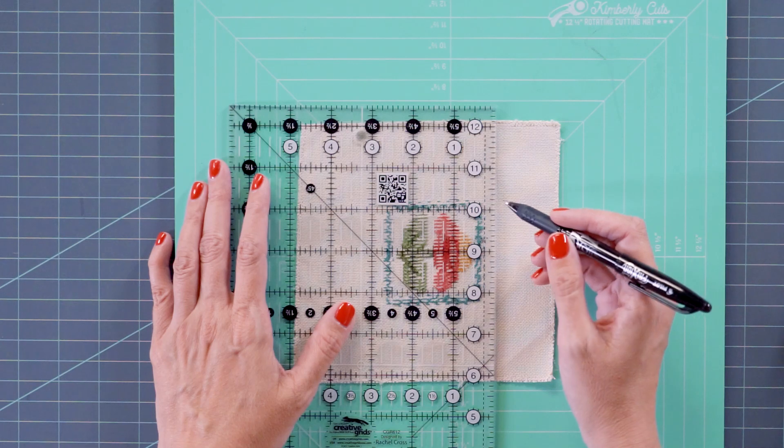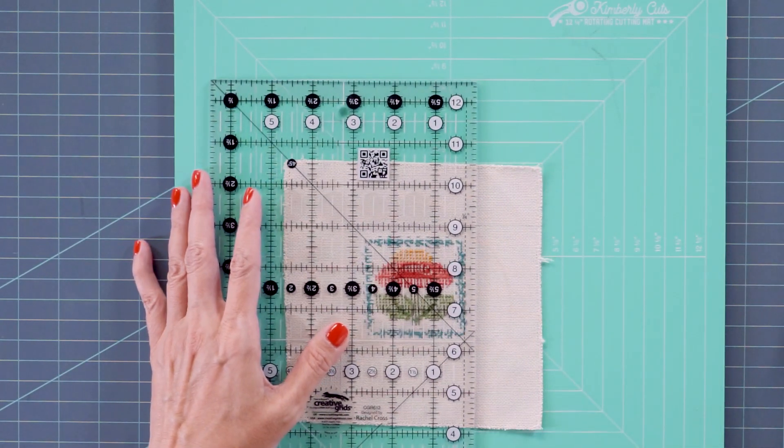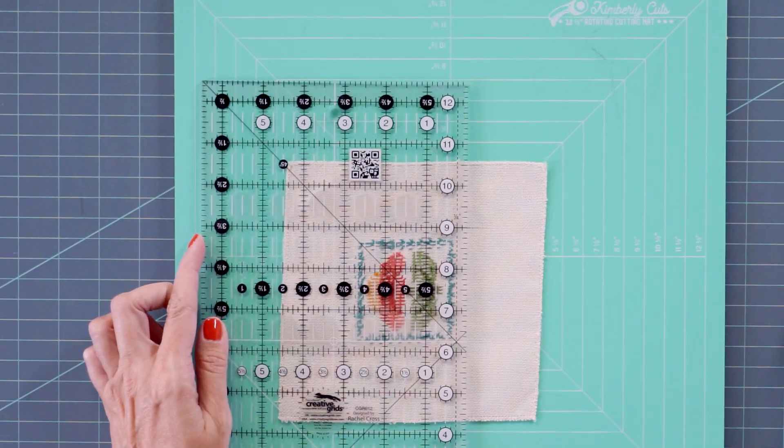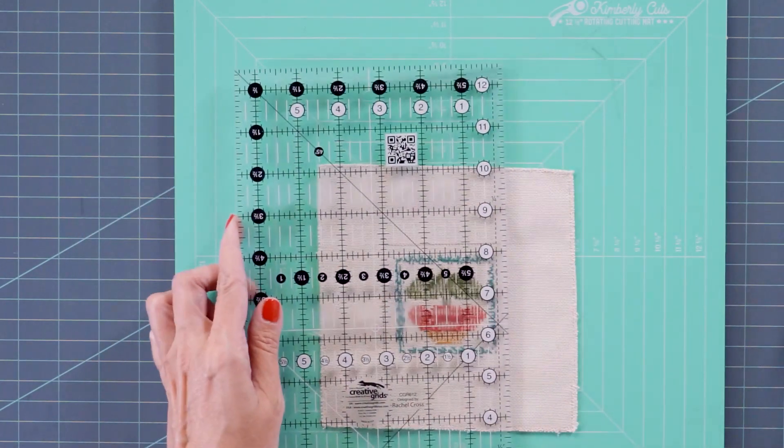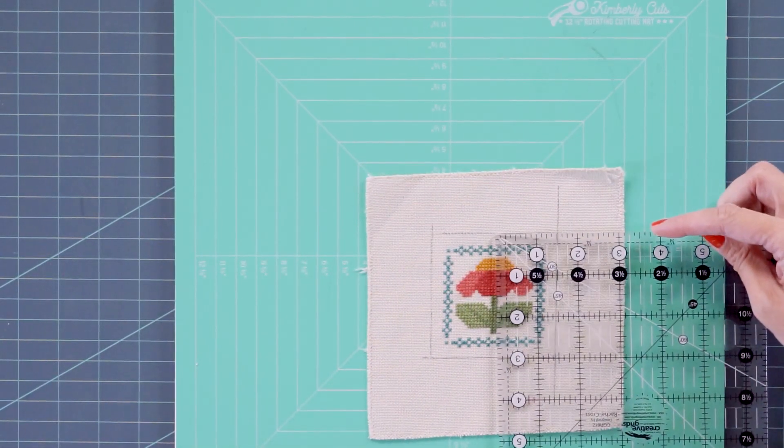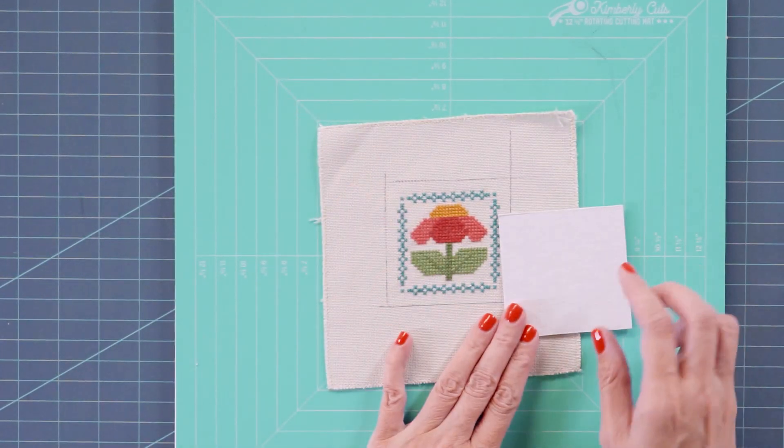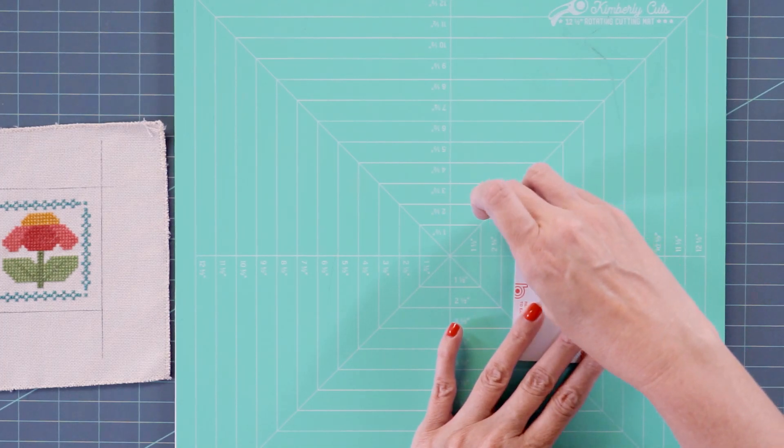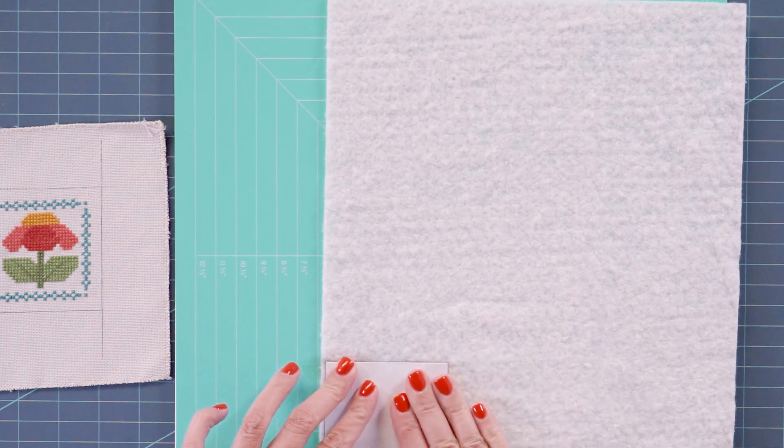I'm using a friction pen today and the ink will disappear with the heat from an iron later. I'm doing the same thing on the back. So I'm going to measure my square and it comes out right about three inches. So I've gone ahead and cut sticky board three inches. So this is cut on the back side. This is your sticky side. You're going to peel this off. Get your batting, place it on your batting and cut around.